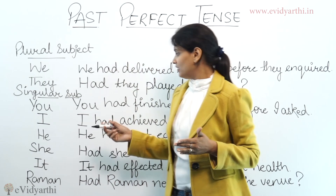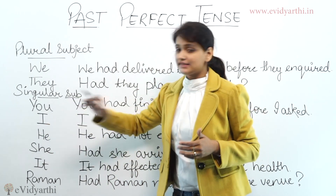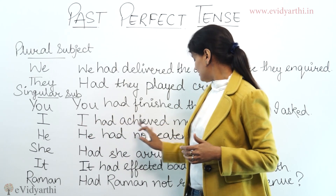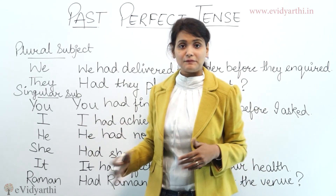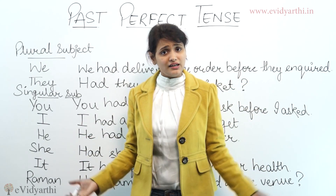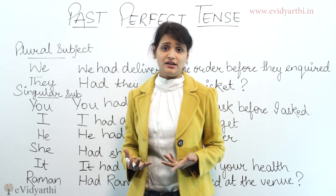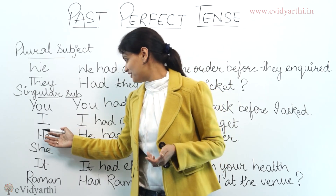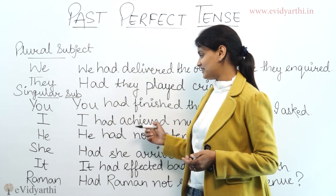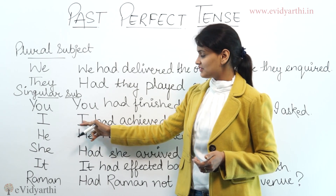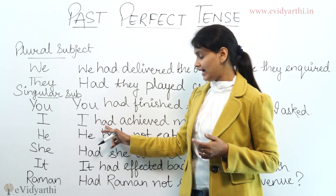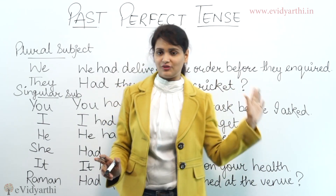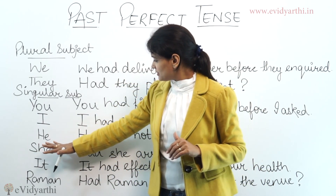You had reached the station first — that is past perfect. The train leaving happened after. Now with a singular subject: 'I had achieved my target.' I had already achieved my target, so definitely I will be given something as a reward. With a singular subject, we use 'had', then the third form of the verb, then the object.